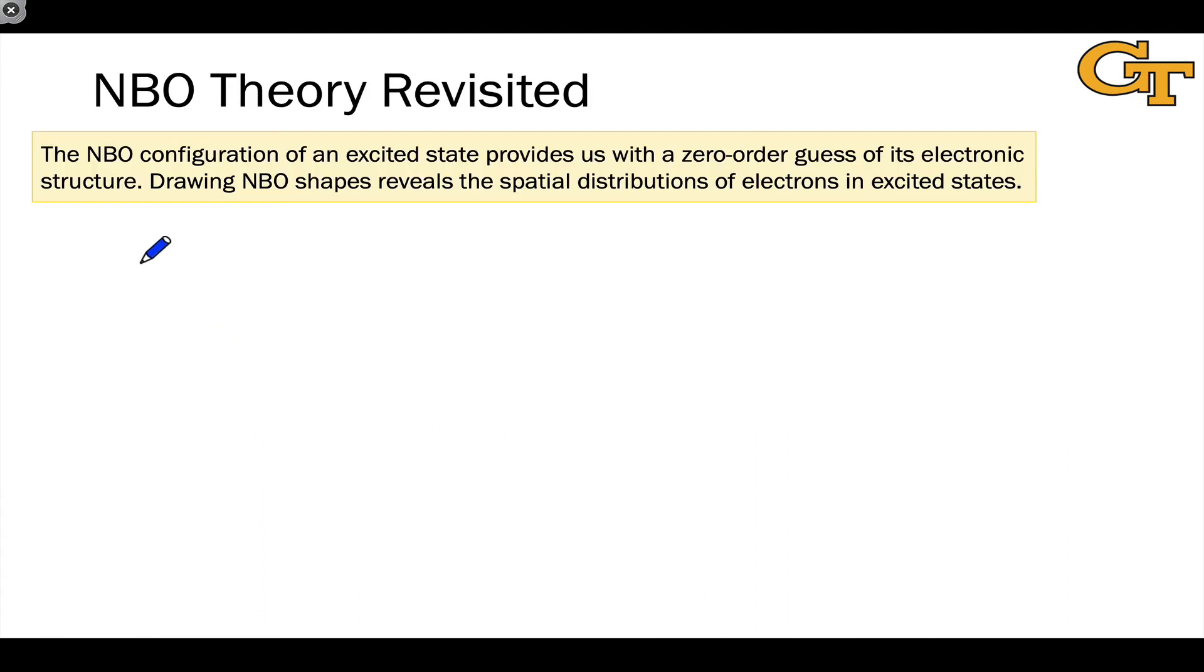So let's now revisit a very important and fundamental idea concerning the electronic configurations of excited state molecules. And this is the simple idea that the natural bond orbital configuration, which can be inferred very often from the Lewis structure of the ground state and a consideration of the orbitals involved in the photoexcitation event, can provide us with a zero-order guess of the electronic structure of an excited state. And drawing those NBO shapes shows us really where the electrons are located, and in particular, where the electrons in the SOMOs, the singly-occupied molecular orbitals, are located in excited states. And I wanted to talk about two general examples of chromophores that we will return to again in more detail in later video series.